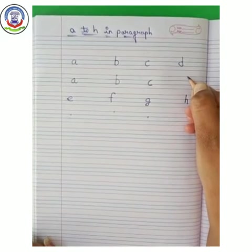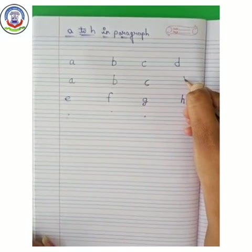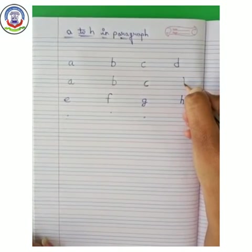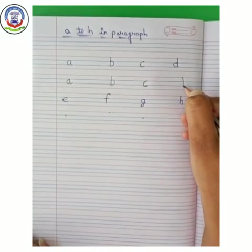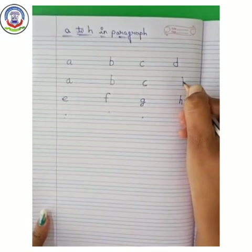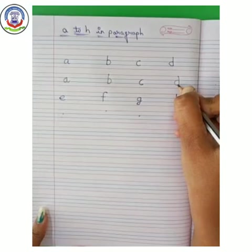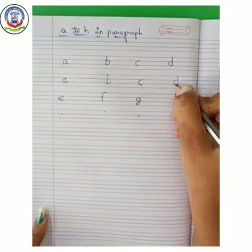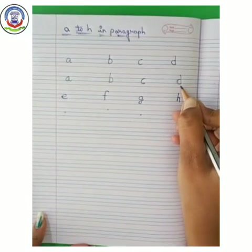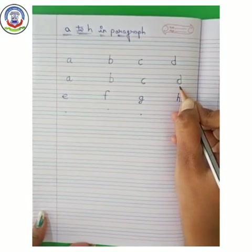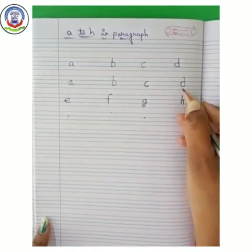Now, next letter — D. Make a standing line from red line to blue line. Now, make a curve in blue line, like this. D. D says D — Dog.